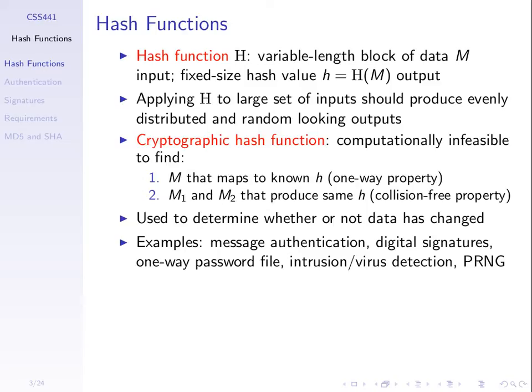The property of that function is such that if we apply it to many different inputs, we should produce evenly distributed and random-looking outputs. If I take a file's contents as input, the hash value that comes out should look like a random number. If I take a very similar file - maybe different by just one byte - the hash value should be another random number with no connection to the previous one. But it is a function, so it's not producing a truly random value - it's applying some algorithm to produce that hash value.